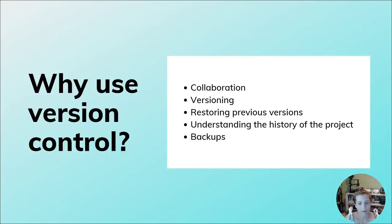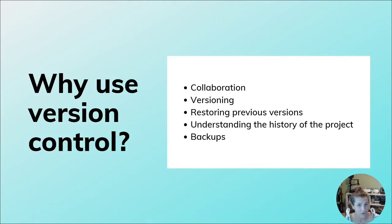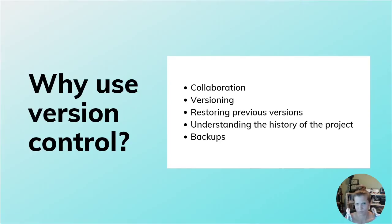So why do we use version control? Git is a version control system, and there are other version control systems out there — for example, TFS, Kiln, Mercurial, Subversion — lots of different version controls.